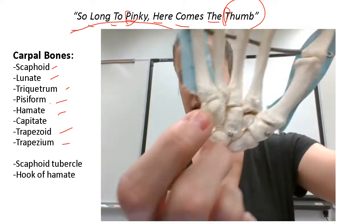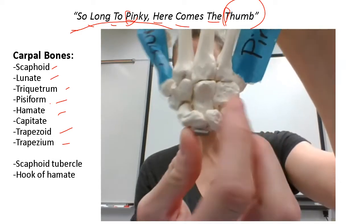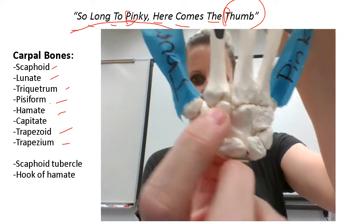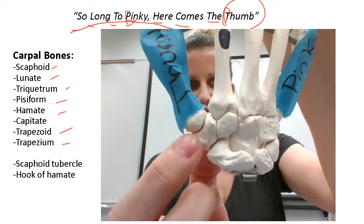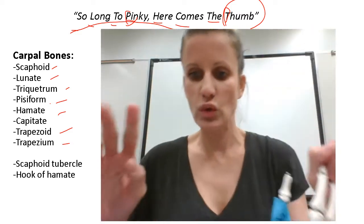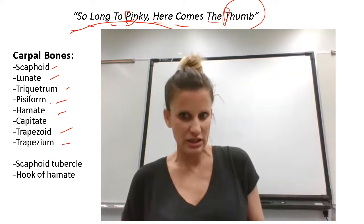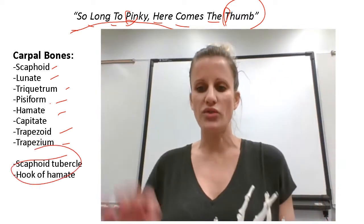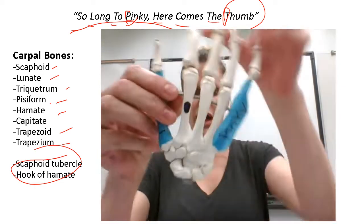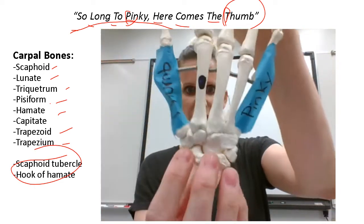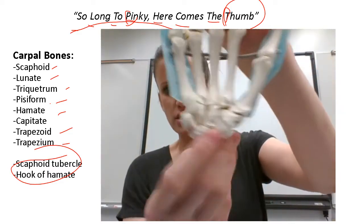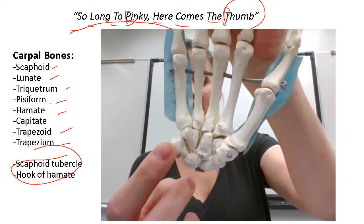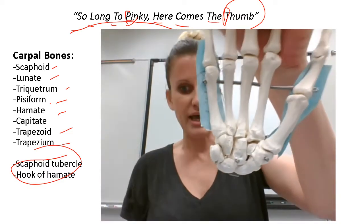So to review: 'So long to pinky' — scaphoid, lunate, triquetrum, and on the palm side, pisiform — then 'here comes the thumb' — hamate, capitate, trapezoid, trapezium. There are two special features people typically need to know: the scaphoid tubercle and the hook of the hamate. Both are on the palm side. I've been showing you the dorsal side of the wrist, but if you flip it to the side where the pisiform sticks out, you'll find these features.